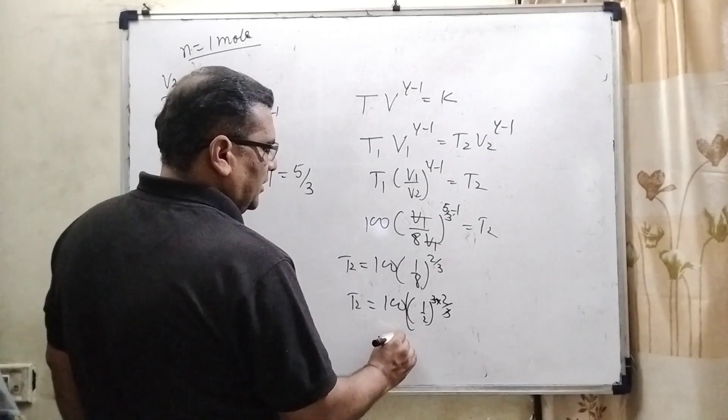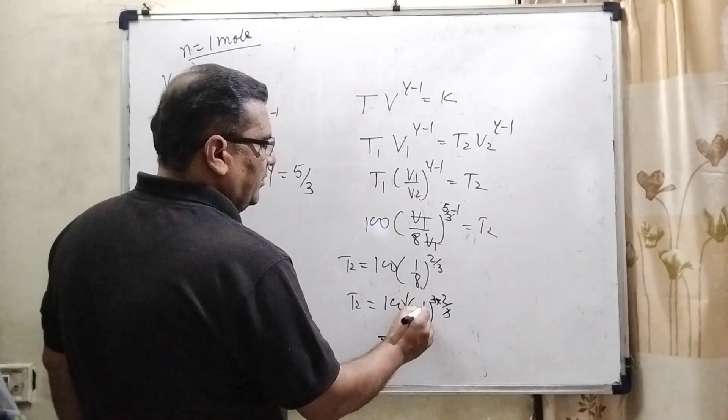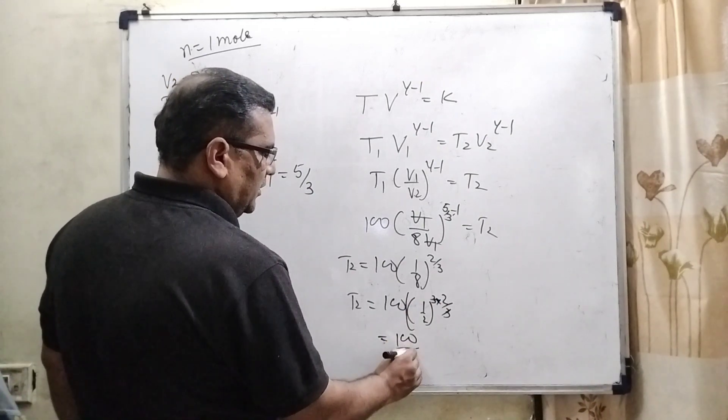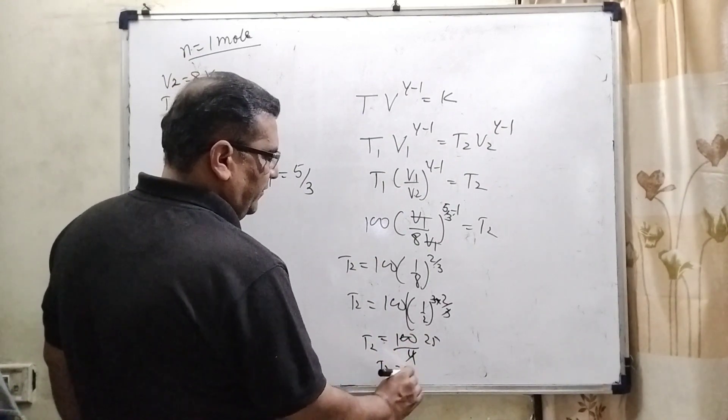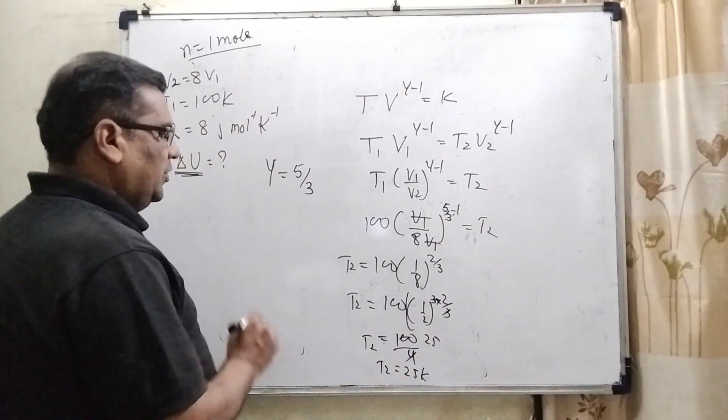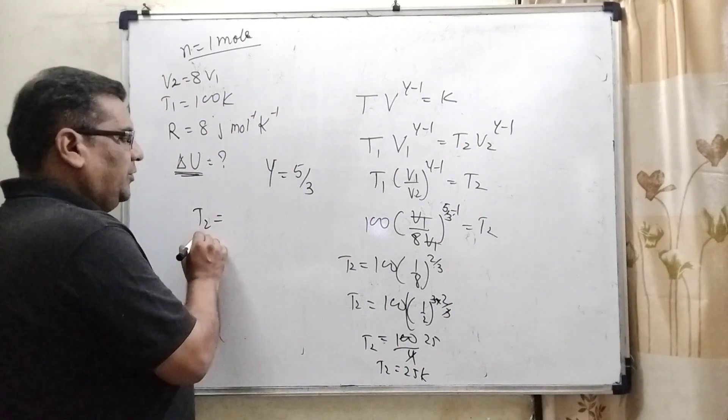So 3, 3 cancel out. 100 and 1 by 2 square means 1 by 4. And this value of T2 is 25K. So here we get the value of T2 is 25K.